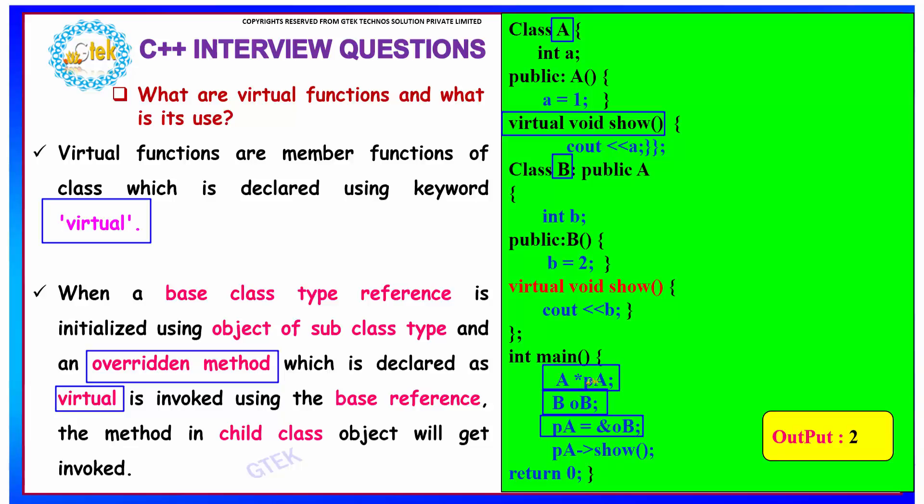The base is A and the reference is PA. So using this PA, I am going to invoke the overridden method, and that will give you the method in child class object.